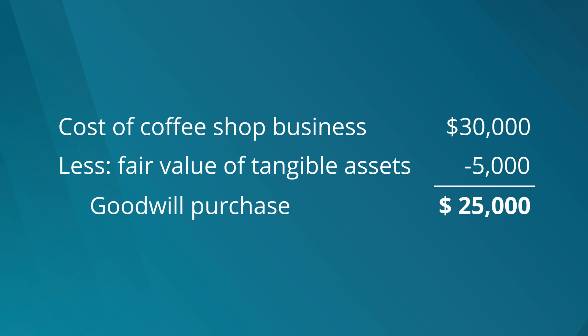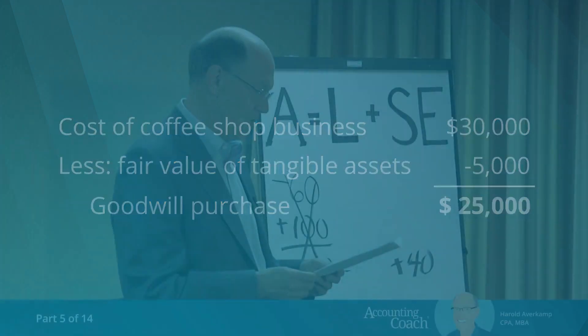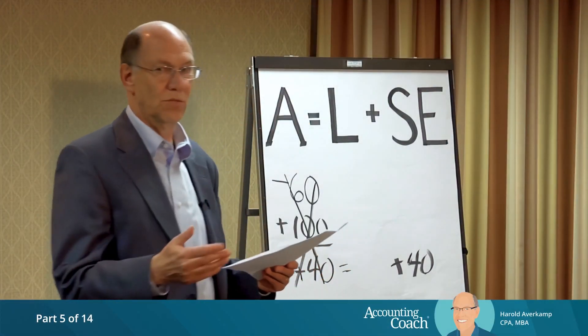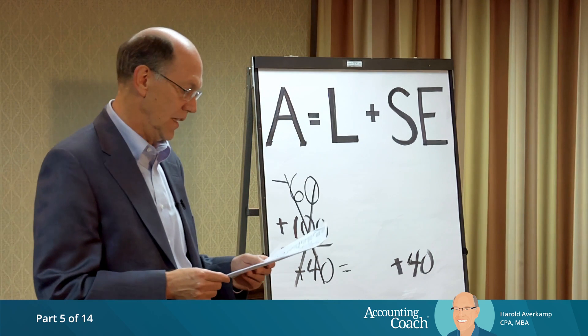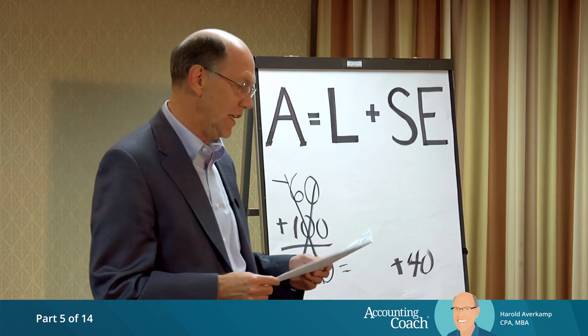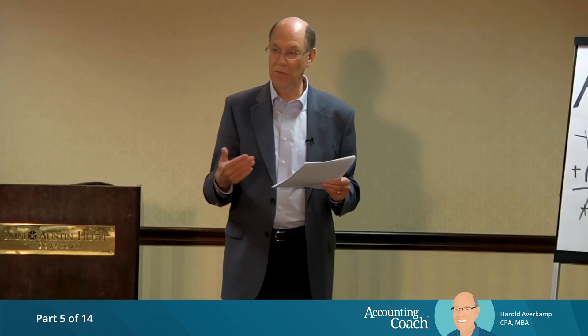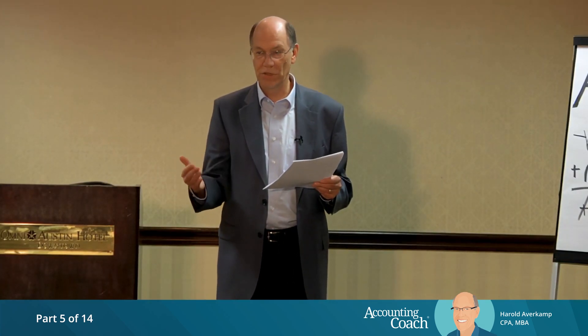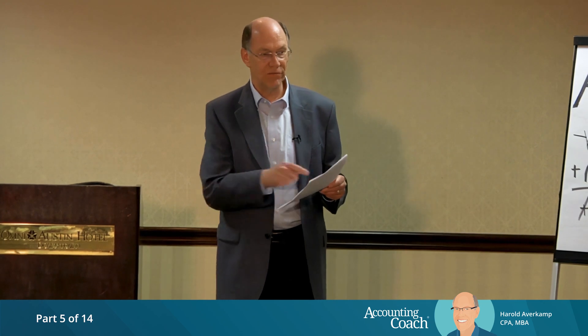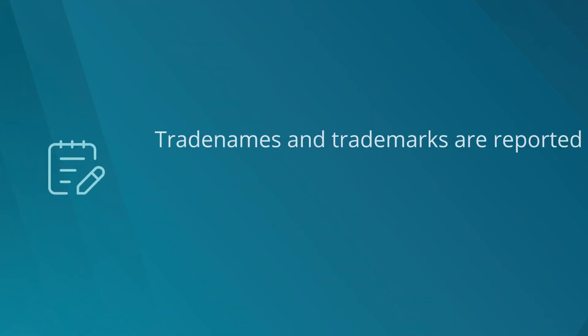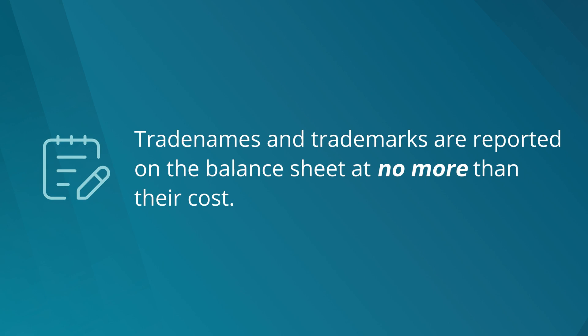And I put that goodwill on my balance sheet. Goodwill occurs only if you purchase another business. Trade names and mailing lists might come up more often, but you have to purchase them to list them here. You don't have goodwill unless you bought another business, and you don't have anything on the trade names line unless you bought a trade name. If I just developed my own trade name, it's not on there.